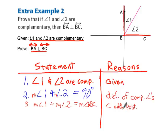And then from there, we're going to use transitive property and show that measure of angle ABC equals 90 degrees. And then from there, we're just going to be able to prove that BA is in fact perpendicular to BC using definition of perpendicular lines.